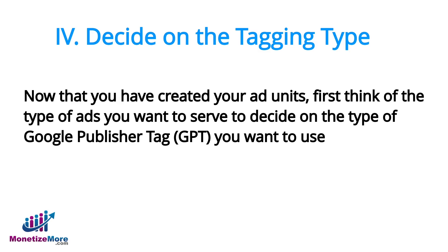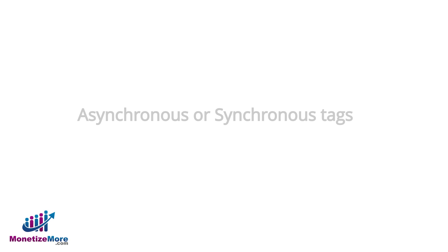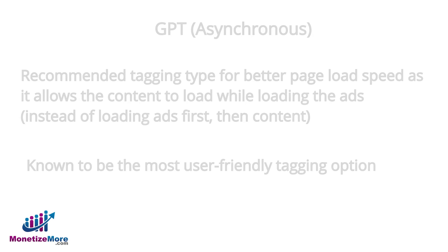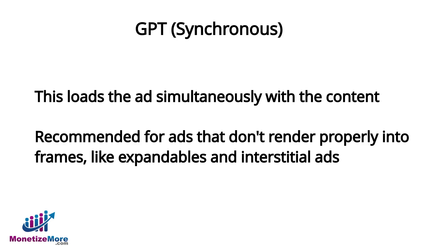The last step is to generate our GPT tags. When doing so, we'll have a choice between asynchronous tags and synchronous tags. Asynchronous tags allow for better page load speed, as they enable content to load separately from ad creatives. Synchronous tags, on the other hand, are recommended for expandables and interstitials — these tags load at the same time as a page's content, which may be detrimental to user experience.